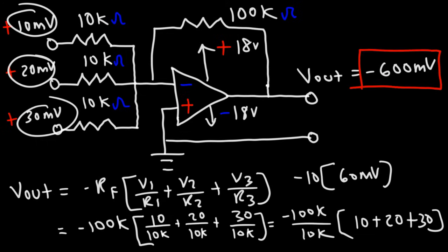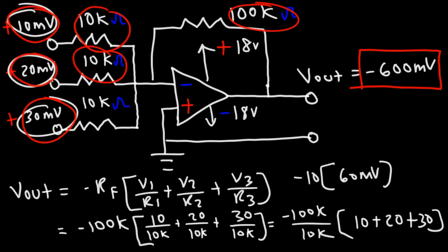So with the summing amplifier circuit, you can either increase the magnitude of the sum of the input voltages, that is if RF is greater than the resistors, or you can actually decrease the output voltage relative to the sum of the input voltages if these resistors are higher. So you can increase or decrease the sum of the voltages. It's up to you.